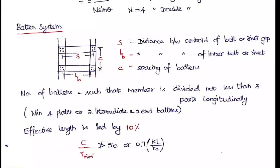For battens, the number of battens must divide the member into not less than three parts longitudinally, and a minimum of four plates must be used. The effective slenderness ratio should be increased by 10% for the batten system — compared to 5% for lacing. Also, c/r_minimum should not exceed 50 or 0.7 × (KL/r0), where KL is the effective length.